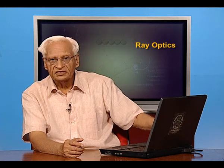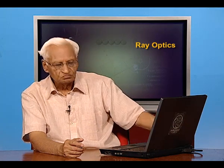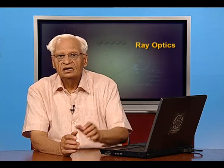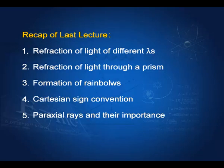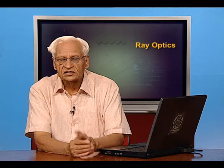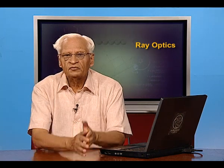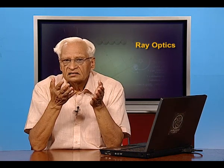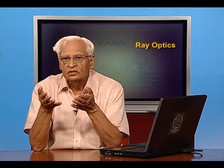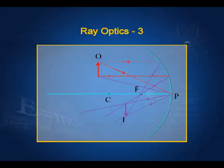Another concept to emphasize is that in all this study, we shall be using only paraxial rays — rays which are near the axis — and therefore make very small angles with the axis, so that we can assume that the sine of that angle equals the tangent of that angle and equals the angle itself. So in this lecture, we shall distinguish between convex mirror and concave mirror.